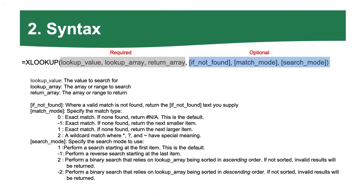Let's learn about the syntax. This is also a critical part. Remember that this tutorial is just an introduction, so we're going to take a quick look at the syntax here. This function has six different parts, six components. The first three are REQUIRED and the last three are OPTIONAL. You can see more description about these components here.